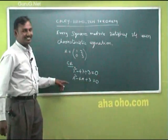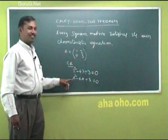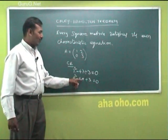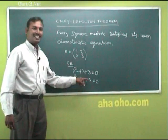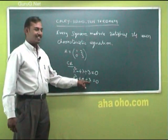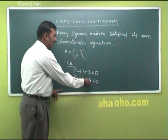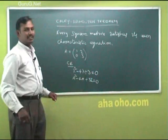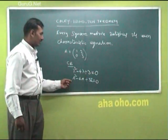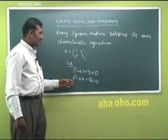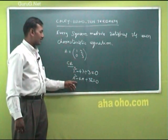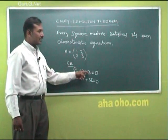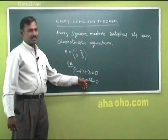Is that right? No — because A squared is a matrix and 4A is also a matrix, but 3 is not a matrix. So instead of writing 3, you write 3I. Every square matrix satisfies its own characteristic equation: replace lambda by A and replace any constant with the identity matrix.